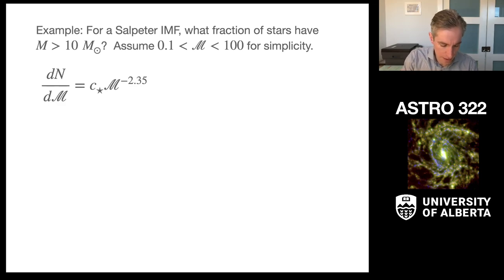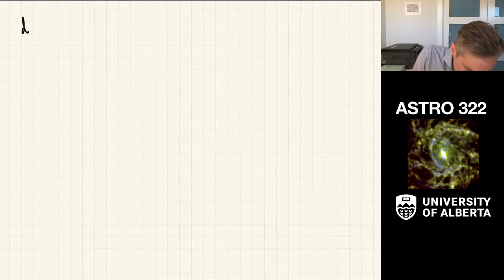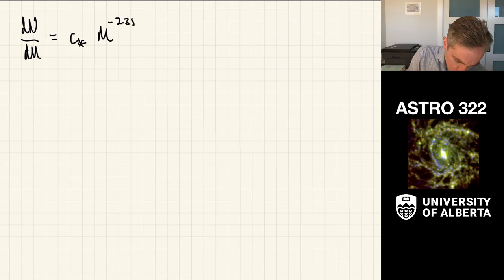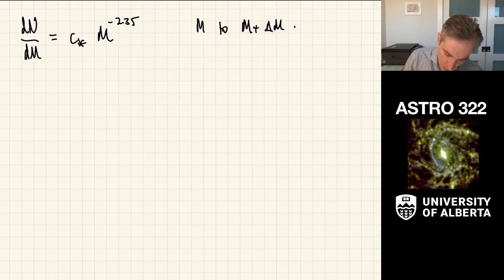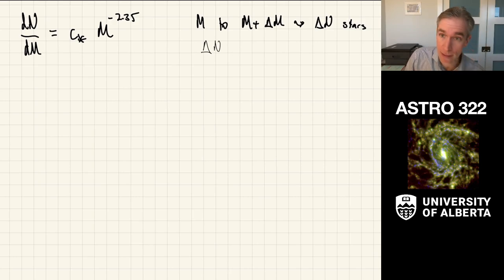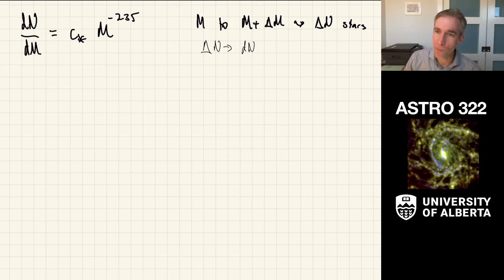So let's get going. The Salpeter IMF says dn/dm has the form C × m^(−2.35). That means in an interval from m to m + δm, there's going to be δn stars. This is basically a function of counting. We formally set this up and let δn go to a differential form. Whenever we have these nice differential relations for an IMF, we 100% want to integrate — so all of these problems are going to be integration problems.